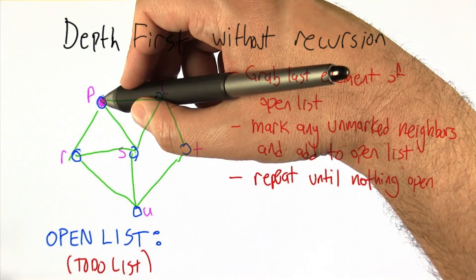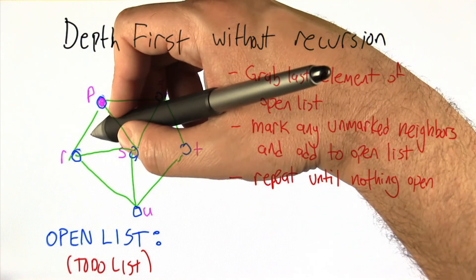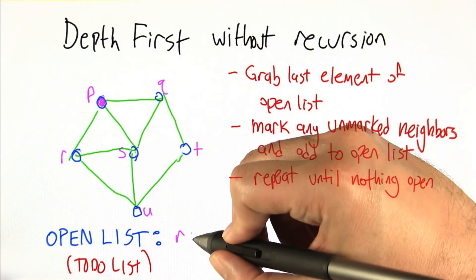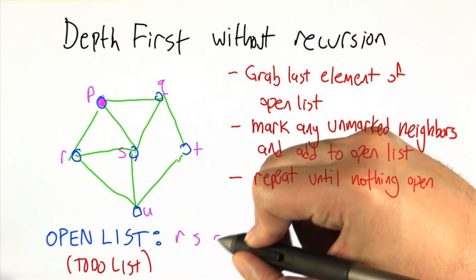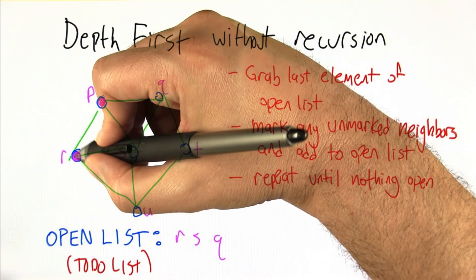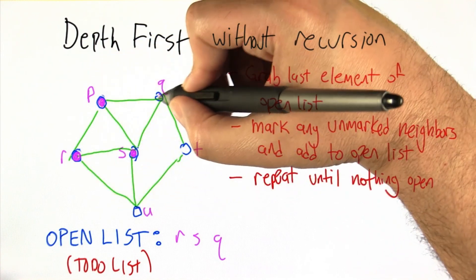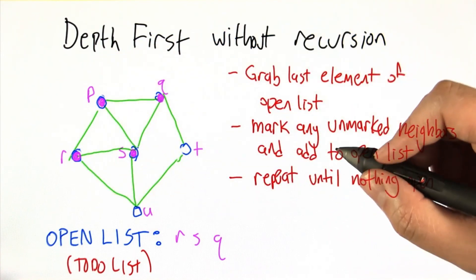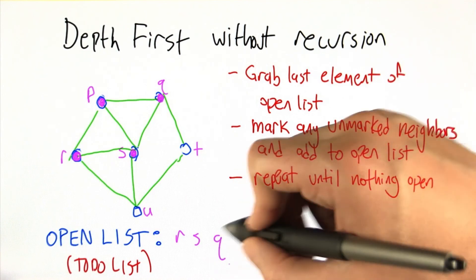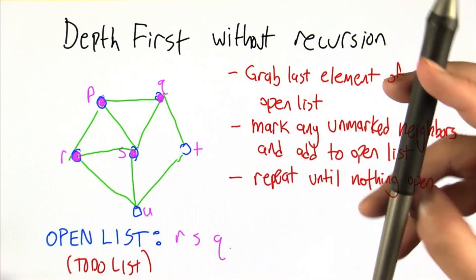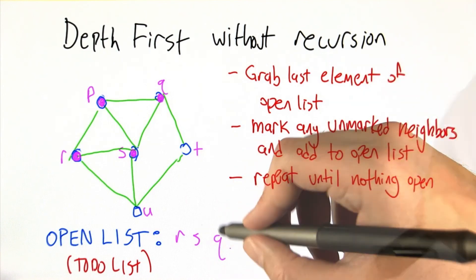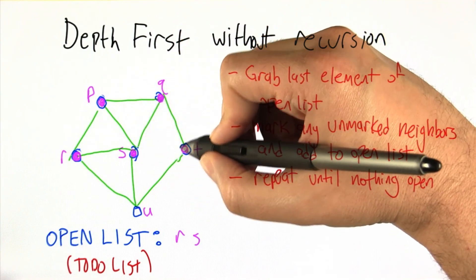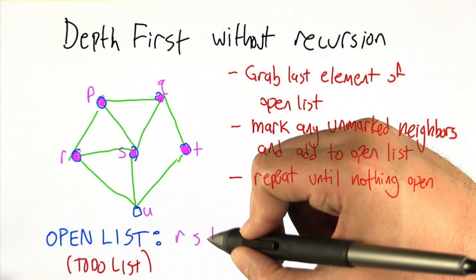The neighbors of P are R, S, and Q. So we add R, S, and Q to the open list and mark them all as visited. Now we're done that process and go back to the beginning. We take the last item off the to-do list — Q — go to the graph, find all the neighbors of Q, which is just T. Mark it and add it to the to-do list.